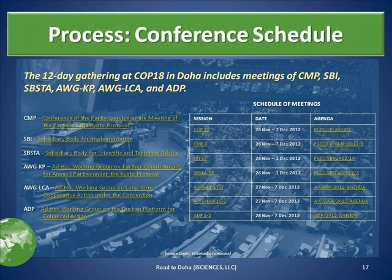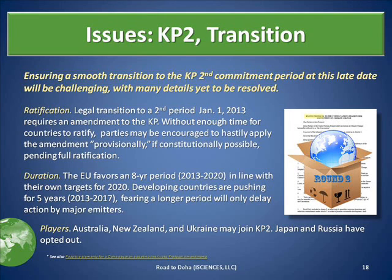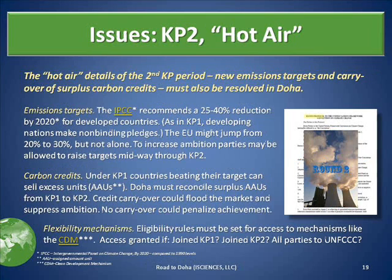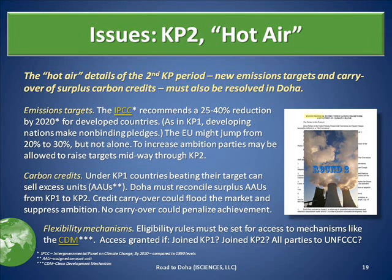The 12-day gathering at COP18 in Doha includes many working group and subsidiary body meetings. Ensuring a smooth transition to the KP2 commitment period at this late date will be challenging. Countries will be encouraged to provisionally apply KP2, pending ratification. The duration of KP2 must be decided, most likely eight years ending in 2020. The hot air details of the second KP period — new emissions targets and carryover of surplus carbon credits — must also be resolved in Doha. To increase ambition, parties may be allowed to raise targets midway through KP2. Doha must also establish rules for carryover of surplus carbon credits and for access to flexibility mechanisms.